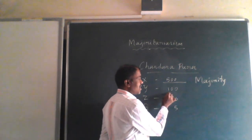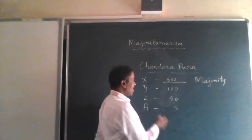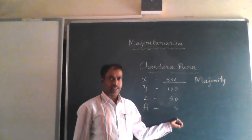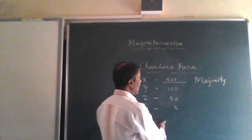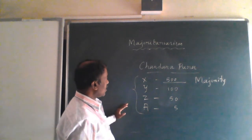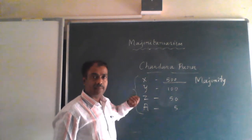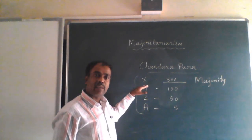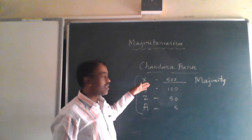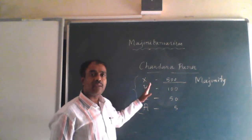What about Y? They are lesser. Z is also lesser than Y, and A — we cannot even imagine — because only 5 families. In this case, just imagine that those who belong to the X category are so strong. They are major landlords, economically well-settled, politically strong, in the education field, and in all other fields — they are well settled.